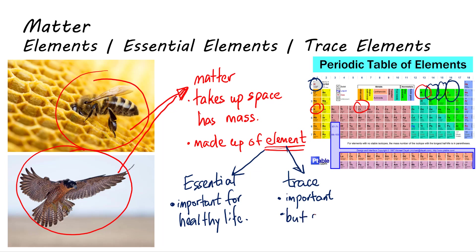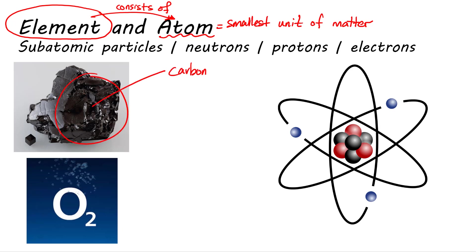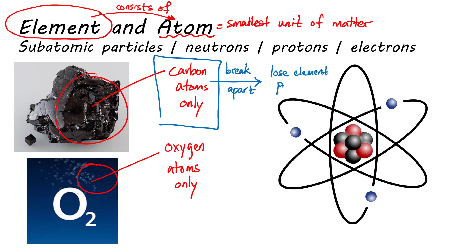Each element consists of unique atoms, which is the smallest unit of matter that still retains the properties of an element. So, element carbon is made up of only carbon atoms, and element oxygen is only made up of oxygen atoms. If we break an atom apart into subatomic particles, these subatomic particles will no longer have the properties of an element. Subatomic particles are like the building blocks that make up the atom, and the three main types of subatomic particles are neutrons, protons, and electrons.